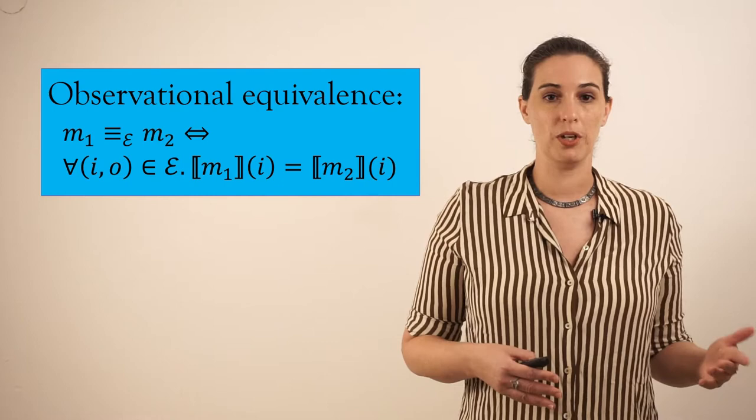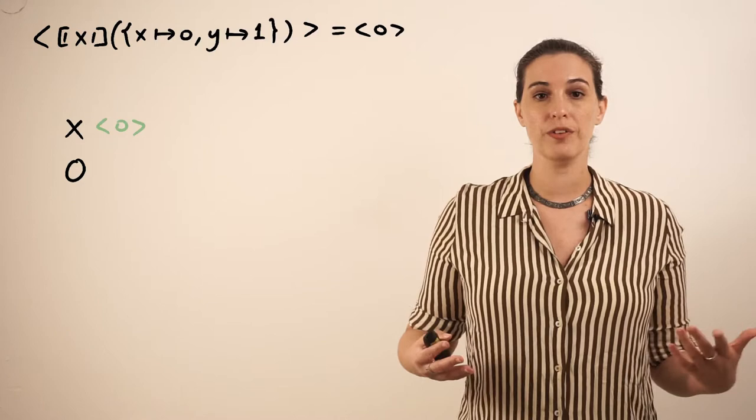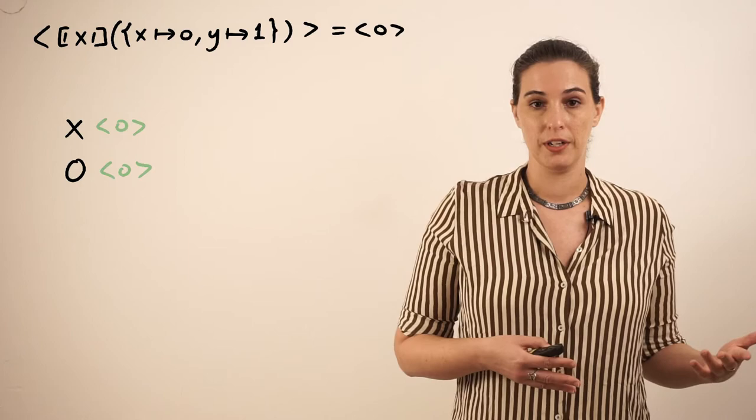We define two programs to be observationally equivalent if they behave the same for every input that we care about, which in our case are inputs from the example. So for instance, if our example's input says x is 0 and y is 1, then the expression x is observationally equivalent to the constant 0, because they evaluate to the same thing on the input.